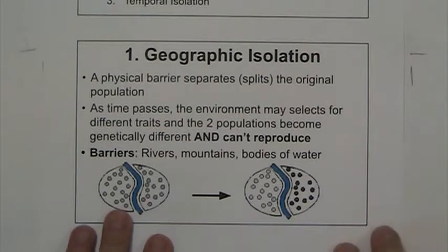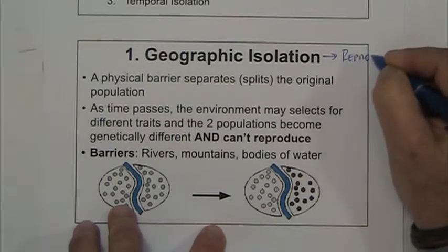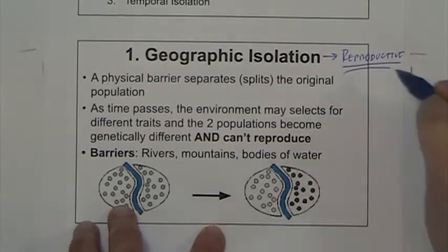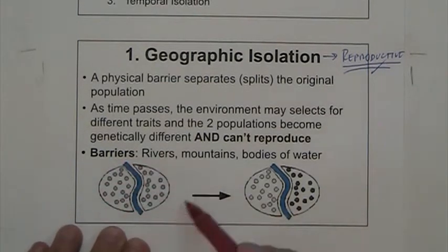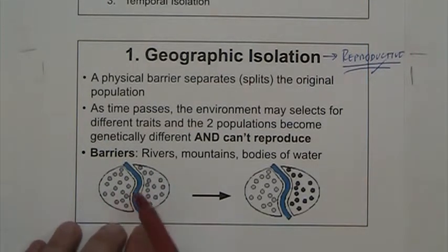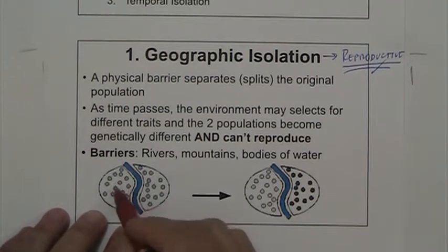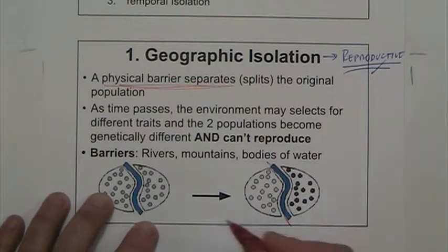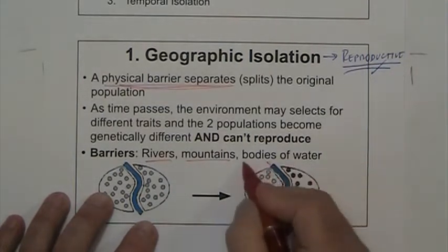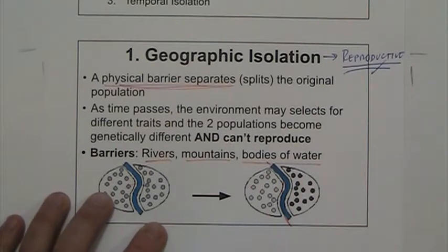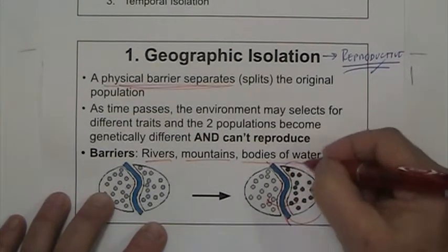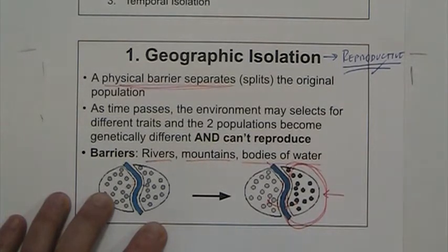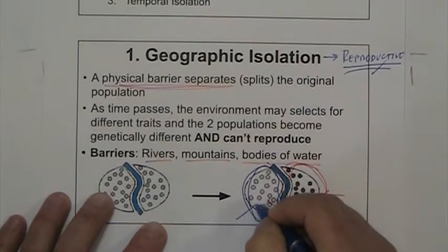Let's see how geographic isolation can lead to reproductive isolation. You have a population — all the same species, in theory able to reproduce with each other — but a physical barrier splits that population. These physical barriers can be rivers, mountains, bodies of water — anything that physically prevents movement of one individual to another place. If you can prevent this movement, they are not going to reproduce with each other, and anything happening on one side stays only on that side.